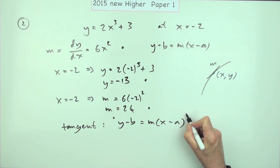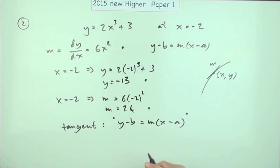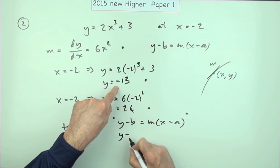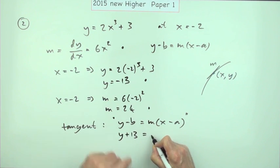Maybe put that in little inverted commas because strictly speaking there's no a's or b's anywhere, but I have defined an m. So y minus the y coordinate, so it'll be y plus 13 is m, whoops a daisy, is 24 times x minus a which is x plus 2.